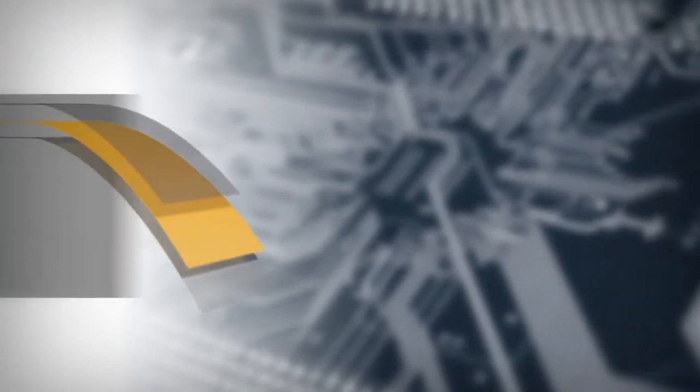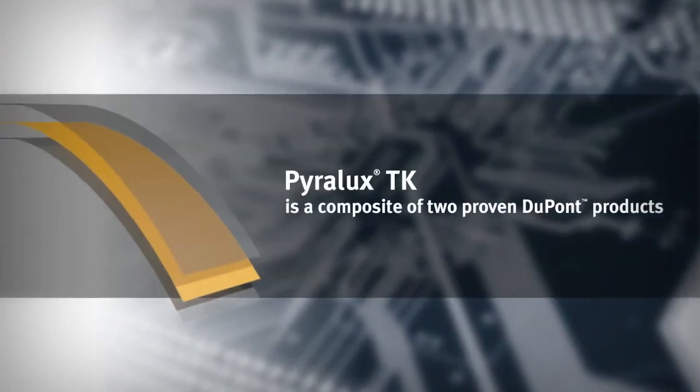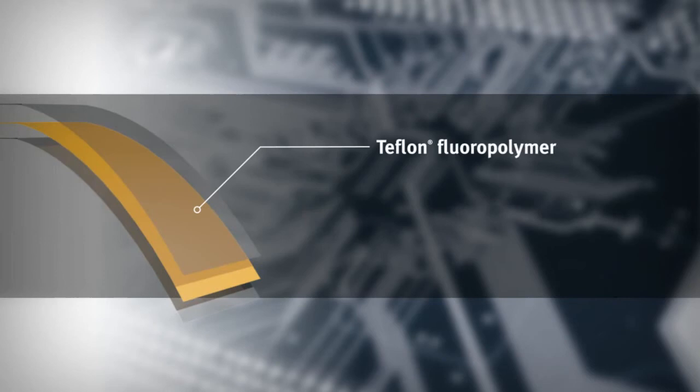As a new Flex laminate, Pyrolux TK is a composite of two proven DuPont products: Teflon fluoropolymer and Kapton polyimide films designed for flexible applications and high speed.